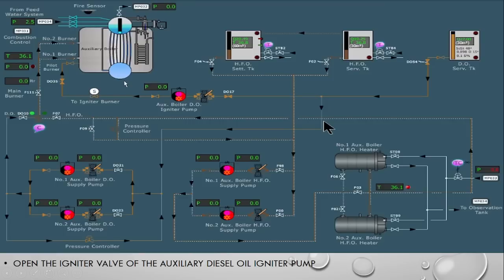This is our water tube boiler. This is the heavy fuel oil settling tank, the heavy fuel oil service tank, and the DO service tank. This is the boiler igniter pump, which helps provide diesel oil to the pilot burner during ignition. This is the boiler DO supply pump and the heavy fuel oil supply pump. This is the boiler heater arrangement and the changeover arrangement — from one side heavy oil comes, and from the other side DO comes.